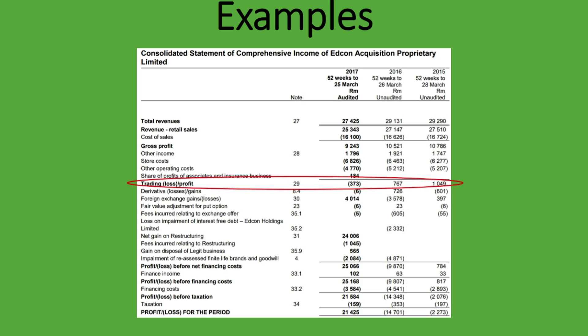Gross profit minus operating expenses gives you the operating profit. But earnings before interest and tax includes all your income and expenses, and the only thing not included is your finance cost or interest expense and your tax. So if you try to identify EBIT here, they don't use that term in this financial statement — you will not see those specific words. But here it is: it's the profit before finance costs. It does not include finance costs or the interest expense, nor taxation.